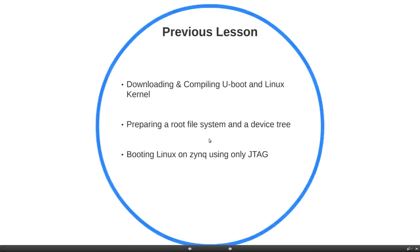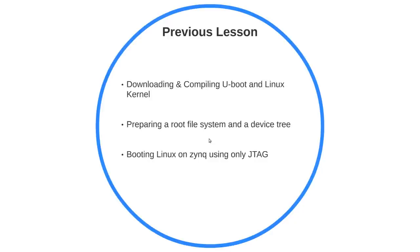In the previous lesson, we learned where to obtain the source codes for the Linux kernel and U-Boot, and the procedure to compile these. We also looked at where to obtain a root file system and a suitable device tree, and how new device trees can be generated or the current one updated. Finally, in practice, I showed how to boot Linux on the Z board using only your JTAG cable, loading all images into DRAM memory and starting Linux.